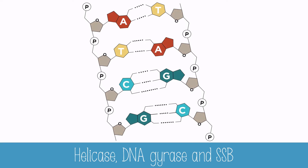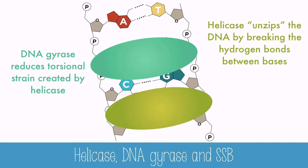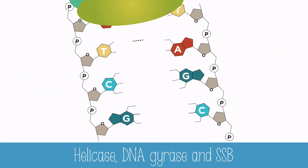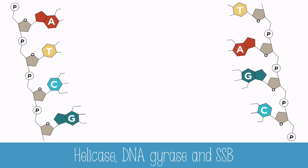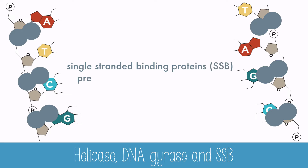At the start of DNA replication, DNA gyrase and DNA helicase work together to unzip and stabilize the DNA. Helicase unzips the DNA by breaking the hydrogen bonds between the bases. But because DNA is helical and can also be supercoiled, DNA gyrase is used to help relieve the twisting, torsional strain of unwinding the DNA.